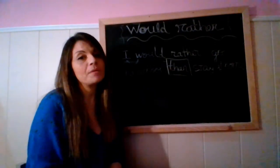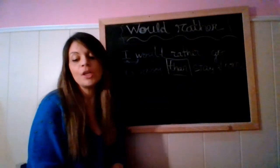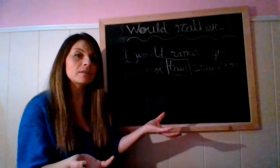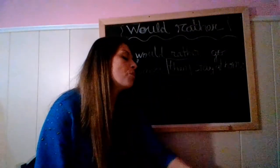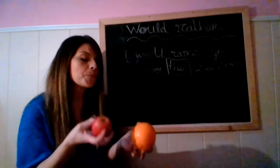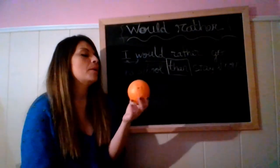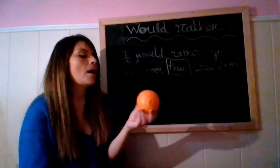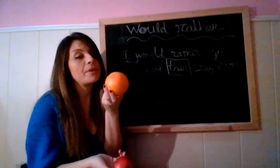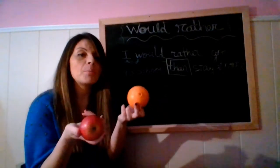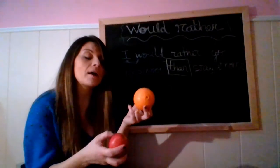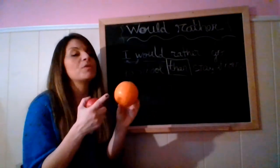First of all, you have to remember that we use 'would rather' to describe a preference of one thing compared to another thing. So there are two things and we prefer one of them. For example, I think oranges are delicious — that's the reason I would rather eat an orange than eat an apple. So I prefer oranges.